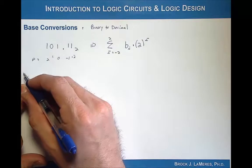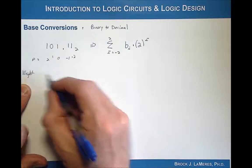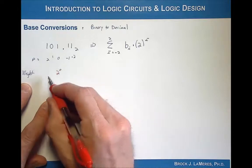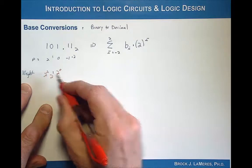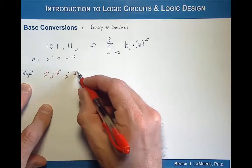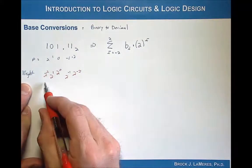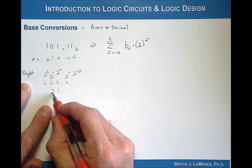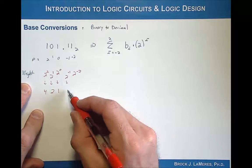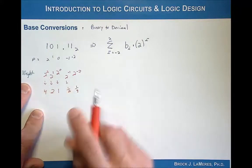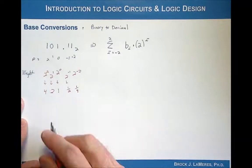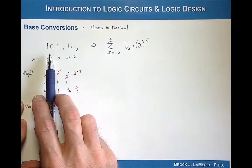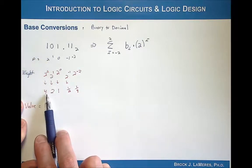We can do this in a column summation by writing out the weight of each position. Starting with position 0: 2 to the 0, then 2 to the 1, then 2 to the 2, and on the fractional side 2 to the negative 1 and 2 to the negative 2. Evaluating those: anything raised to the 0 is 1, anything raised to the 1 is itself, and 2 squared is 4, so the weights are 1, 2, and 4 going left. On the fractional side we have 1 half and 1 fourth. Now we take the value of each bit and multiply it by its positional weight, then sum everything.